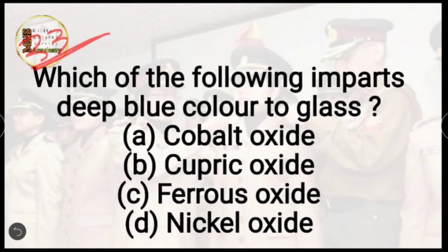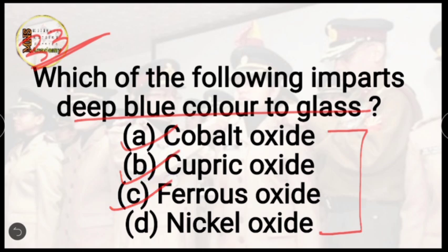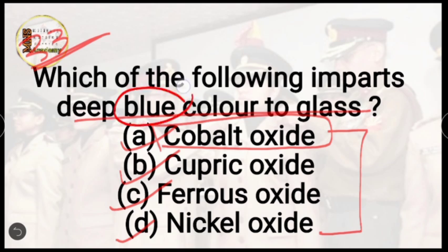Question number 33: which of the following imparts a deep blue color in glass? Options are cobalt oxide, cupric oxide, ferric oxide, or nickel oxide. The correct answer is option A, cobalt oxide. Cobalt oxide is very intense — even a small amount added will turn the glass deep blue.